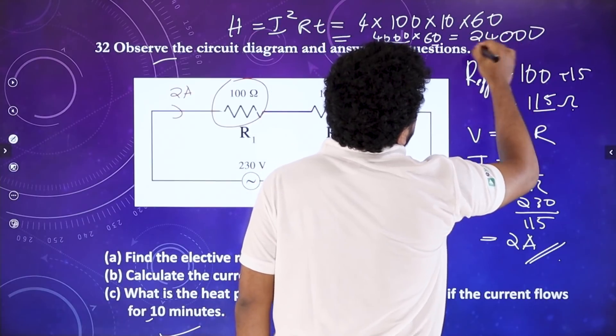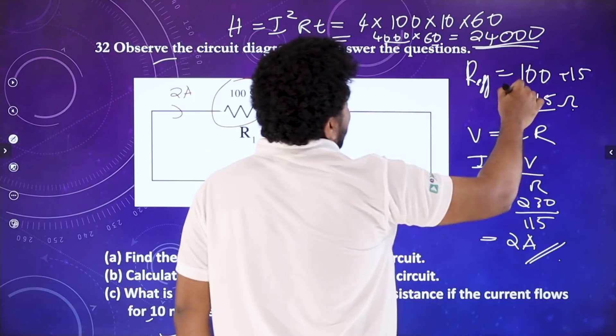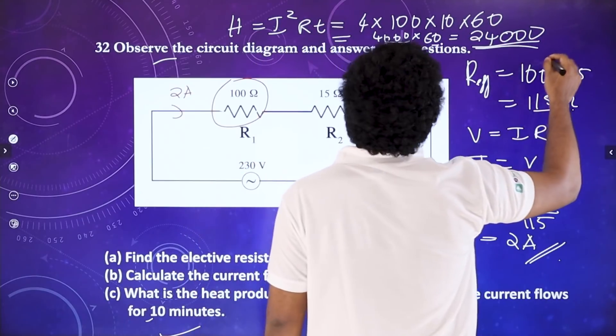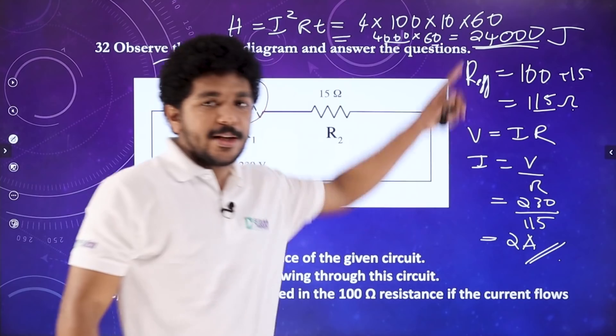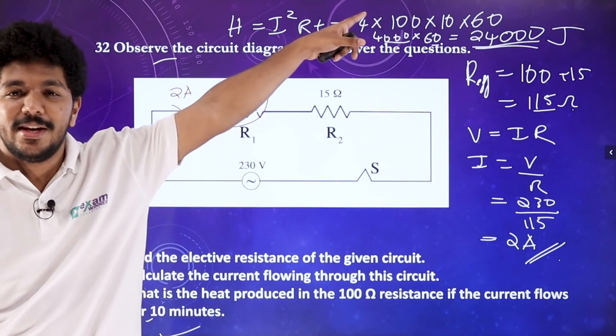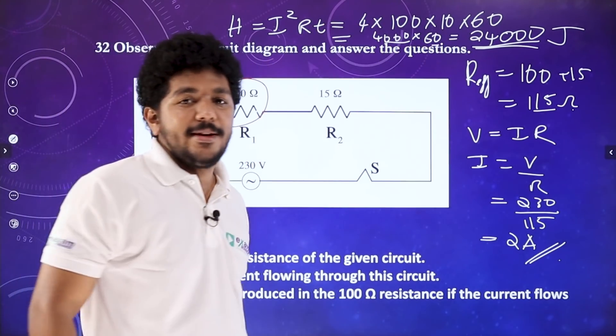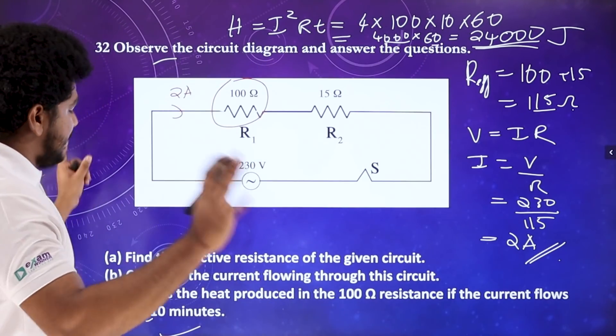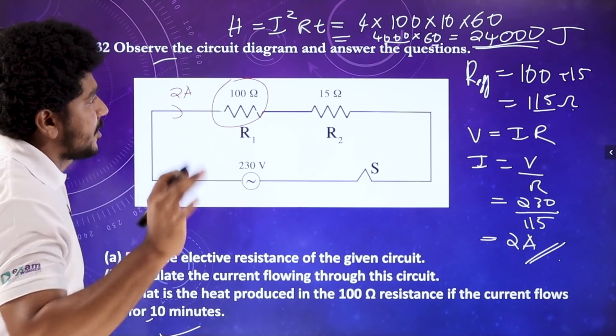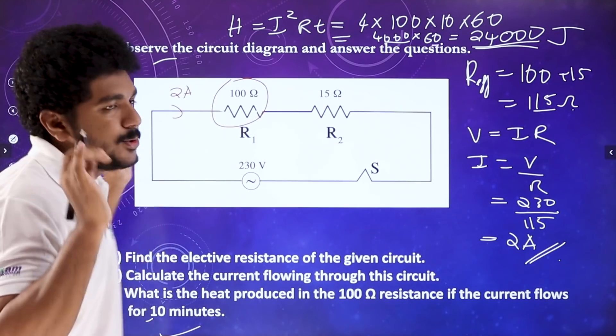What is the heat produced in the 100 ohm resistor if current flows for 10 seconds? Using the formula H equals I squared R T: H equals 2 squared times 100 times 10 — that gives 4 times 100 times 10 equals 4000, wait — 4 times 600 is 24,000. So the heat produced is 24,000 joules.